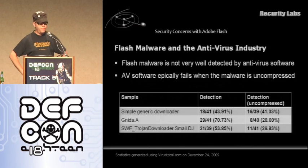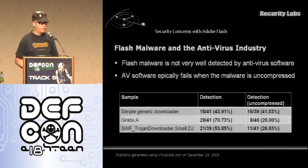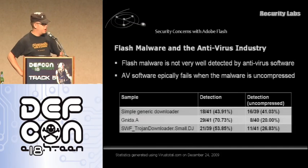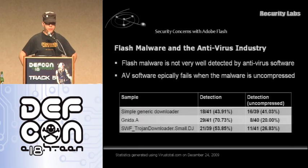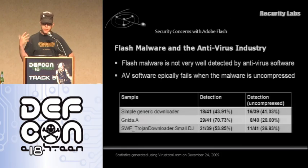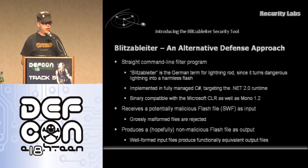And then there are AVs. Here's the thing about AVs and Flash: Flash files can be and most commonly are zip-compressed inside. When you take the most common Flash malware — Gnida it is called — if you upload that to VirusTotal you get coverage of about 70%. Now if you simply decompress the file — it's still the same file, just unzipped — and upload it again, only 8 out of 40 AVs detect the most common Flash malware we've ever seen. So AVs are an epic fail when it comes to Flash.